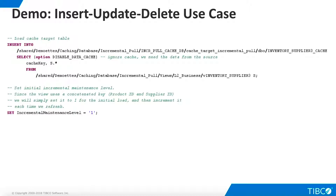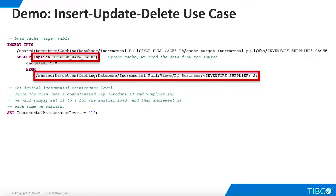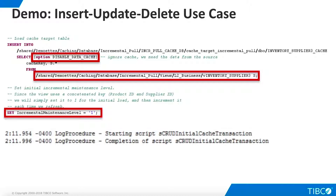We'll look at the parts that differ from our previous scripts. This script is simple: the INSERT statement bypasses the cache and loads all rows from the source into the cache target table. Here is an interesting design decision — in the previous example, which only concerned inserts, we used the highest transaction ID as the incremental maintenance level. Now, dealing with deletes and updates, the highest transaction ID does not necessarily correlate to the latest changes, so we initialize the incremental maintenance level to one and increment it with each refresh. You might instead choose to use a date and time or some other approach.